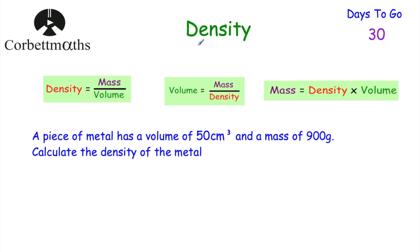Today we're going to look at density, and then after density we'll look at pressure. These are compound measures — we've also looked at speed, which is another compound measure. With speed, it told us how far something travelled in a certain amount of time. In terms of density, it tells us how heavy something is for a certain amount of volume — for instance, how many grams one centimetre cubed would be, or how many kilograms one metre cubed would be.